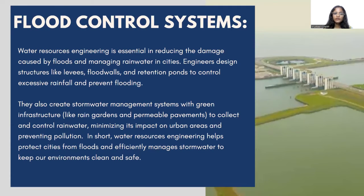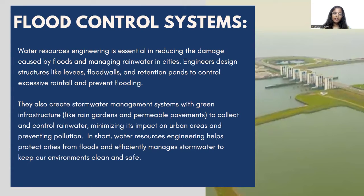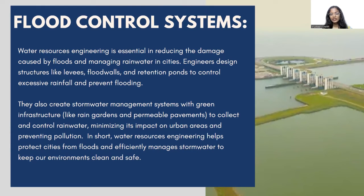The third example is flood control systems. Water resources engineering is essential in reducing the damage caused by floods and managing rainwater in cities. Engineers design structures like flood walls and retention points to control excessive rainfall and prevent flooding. They also create stormwater management systems with green infrastructure like rain gardens to collect and control rainwater, minimizing its impact on urban areas and preventing pollution. In short, water resources engineering helps protect cities from floods and efficiently manages stormwater to keep our environment clean and safe.